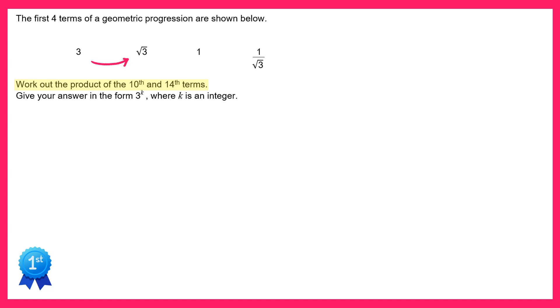To get from 3 to square root 3 you could divide by square root 3. This works for the next one because square root 3 divided by square root 3 is just 1, and then 1 divided by square root 3 is obviously 1 over square root 3. So to get from one term to the next term you divide by square root 3. This is also the same as multiplying by 1 over root 3.